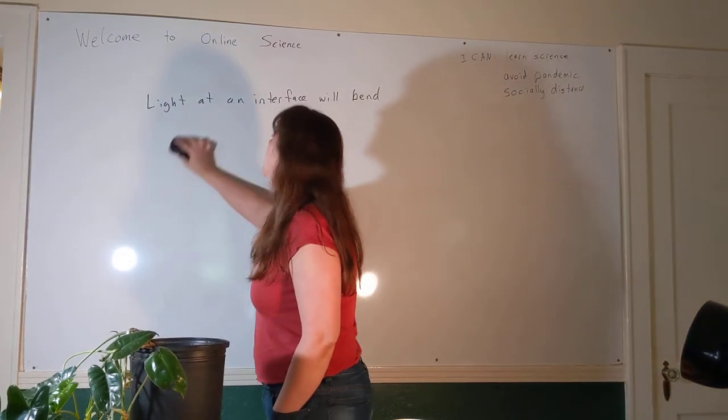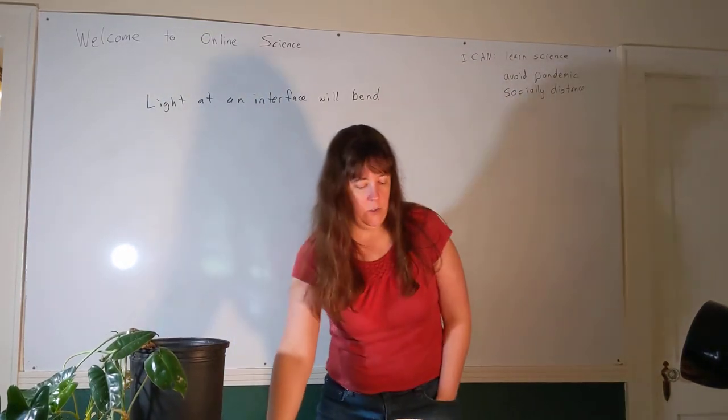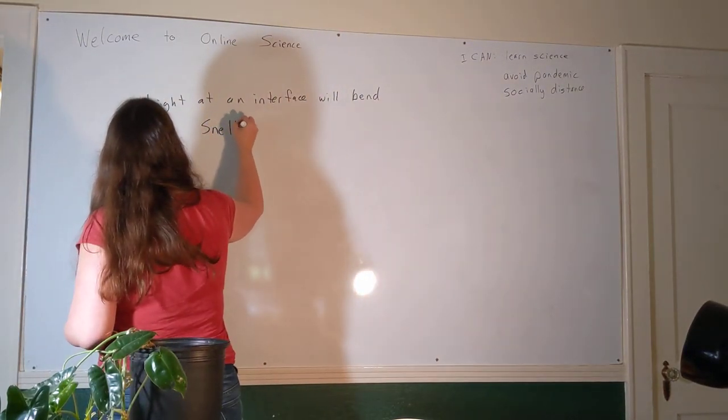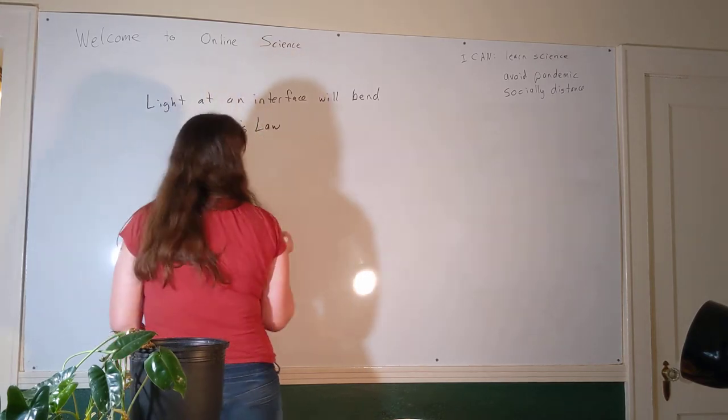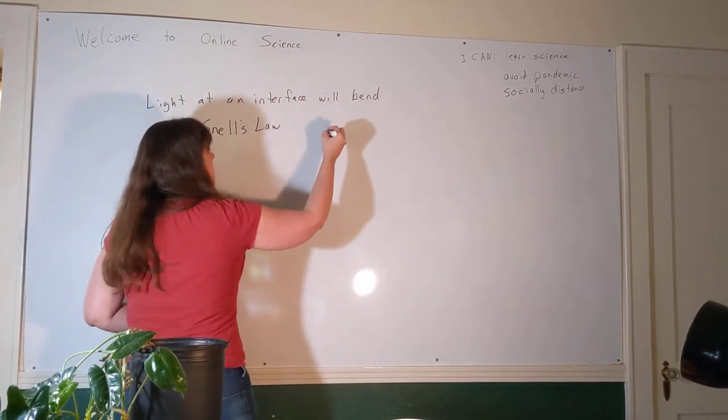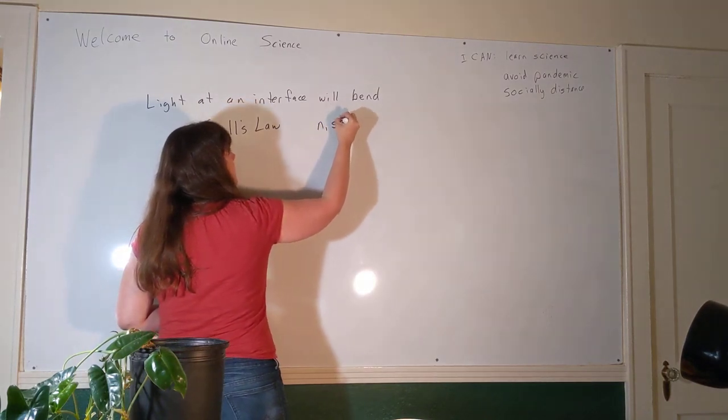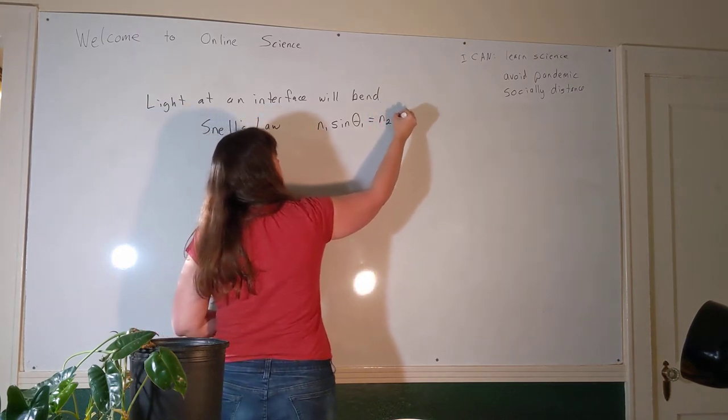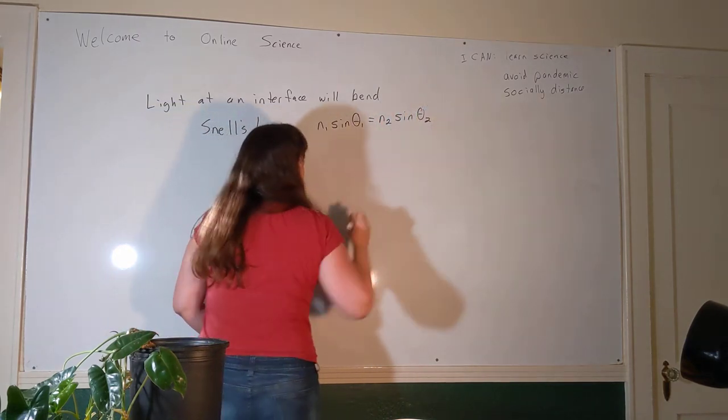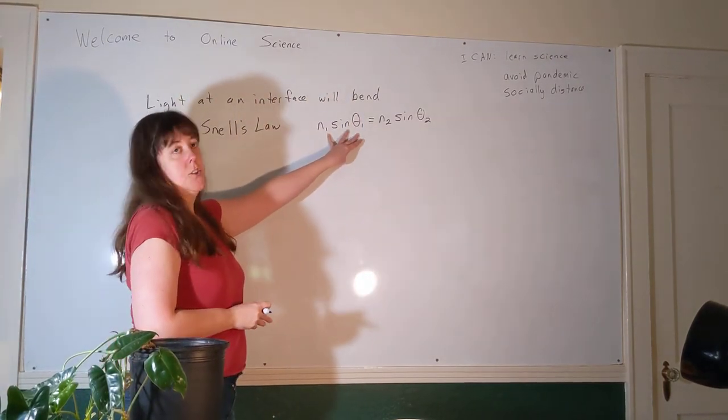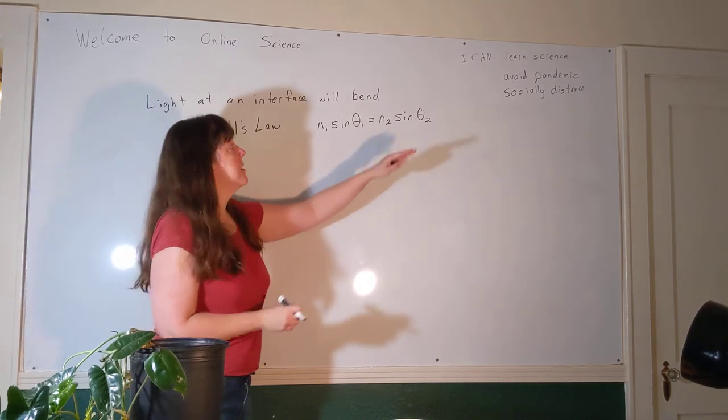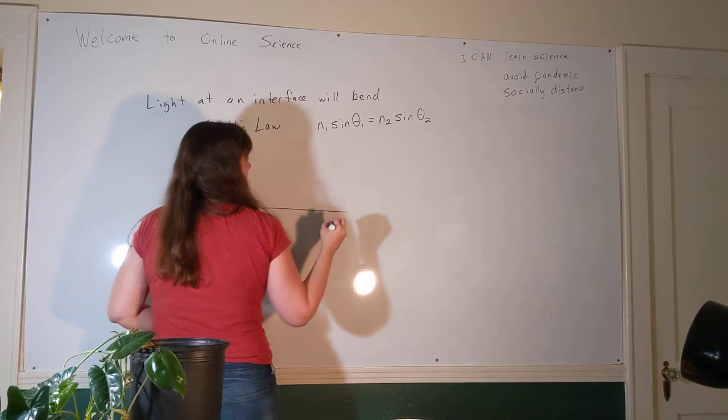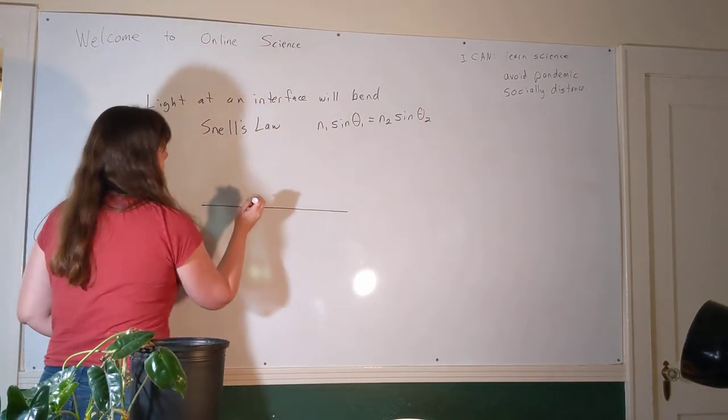The amount that it will bend is given by Snell's law. Snell's law is one of my favorite laws because it's fun to say. Snell's law describes the bending of light at an interface, and this is what it looks like: n1 sine theta 1 equals n2 sine theta 2, where 1 is where the light starts out—the first medium—and 2 is the second medium. And that theta we're going to measure just like we did with the reflected angles: we're going to measure it to the normal line.